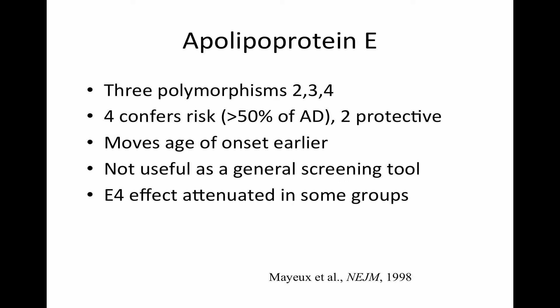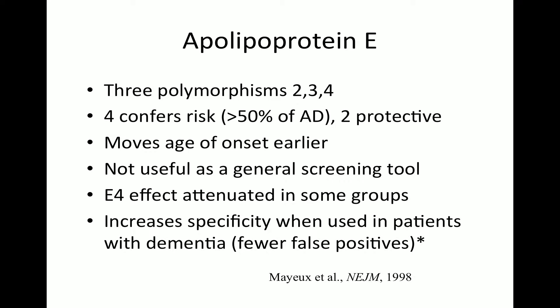The E4 effect has been studied mainly in Caucasian groups, but it looks like its effect is attenuated in different ancestral backgrounds. Richard Mayeux at Columbia has done work in Afro-Caribbeans, where the effect appears present but weaker. In the clinic, we really only use APOE genotyping to increase diagnostic specificity — if I see a 60-year-old with a slightly atypical presentation and they carry one or two APOE4 alleles, that really increases my clinical certainty.